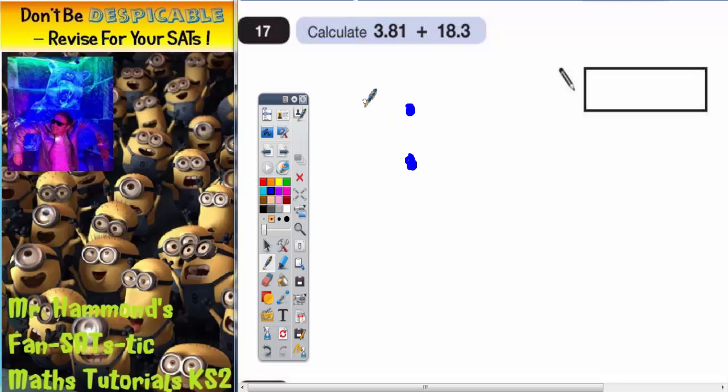So let's put the bigger one on top so we've got 18.3 and then we've got 3.81 so 3.81. Now put your two lines for your answer.